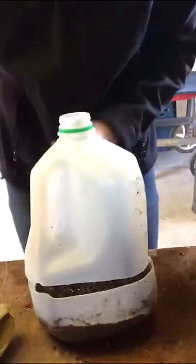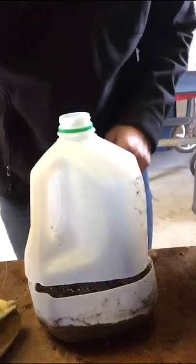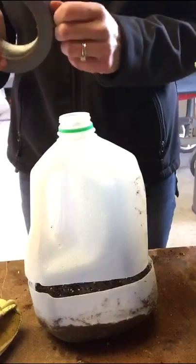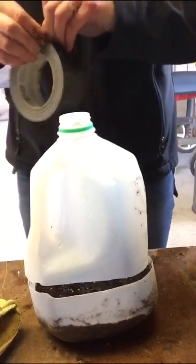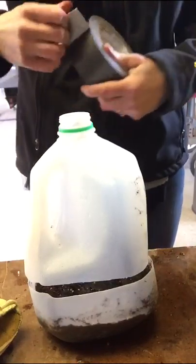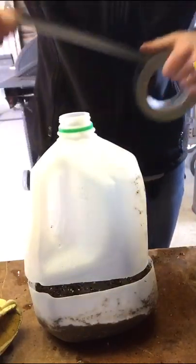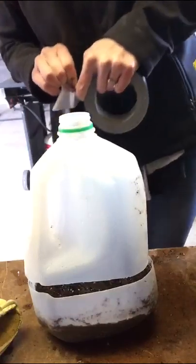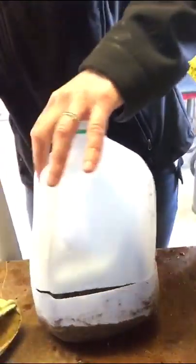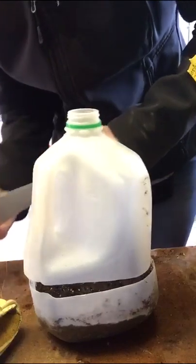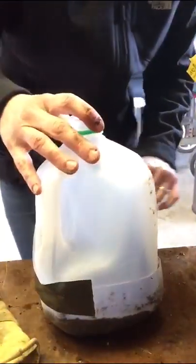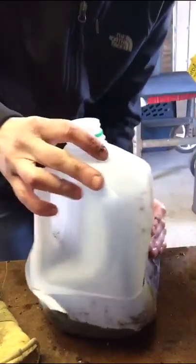And then you take duct tape. And you're going to duct tape all of it together. So just get one big piece of duct tape. And then wrap it around. And it's not going to be super beautiful or pretty. But you can decorate it if you want to. I'm just doing this quick. You're going to wrap it around like that.